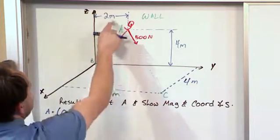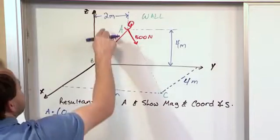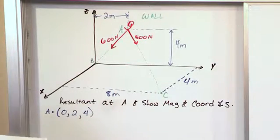The Y component, which is over here, is 2. And the Z component, which is up and down, is 4. So we have 0, 2, 4 for A.